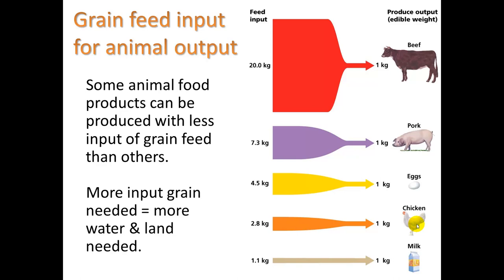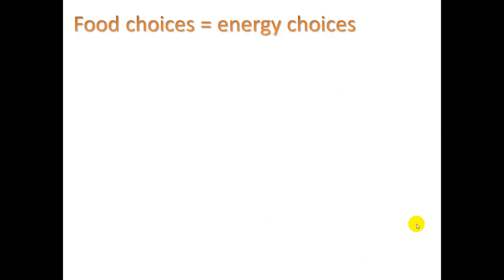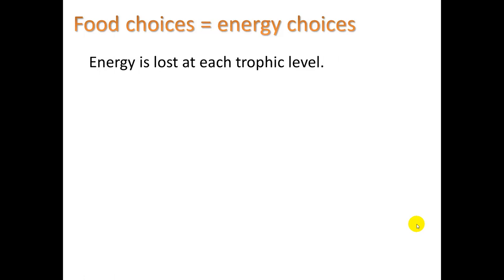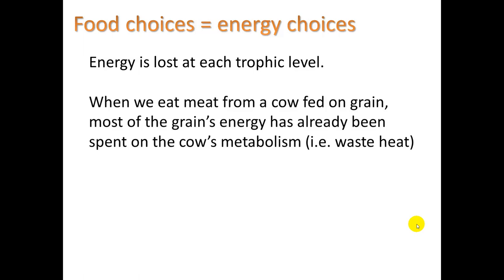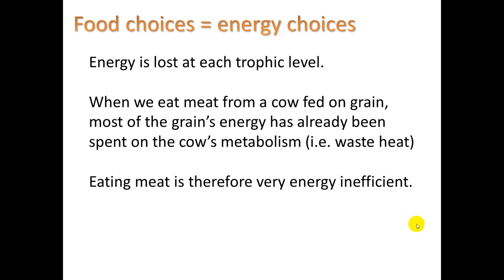More input of grain needed means more water and land needed. Our food choices are equivalent to and contribute to our energy choices. Energy is lost at each trophic level. If you are eating at the secondary trophic level — meaning you are a vegetarian — that is a more efficient energy choice than eating at the third trophic level as a carnivore. When we eat meat from a cow fed on grain, most of the grain's energy has already been spent on the cow's metabolism, i.e., waste heat. So eating meat is therefore very energy inefficient.